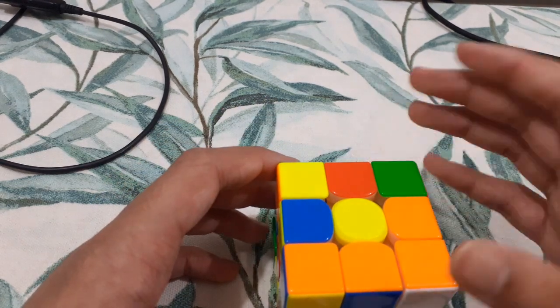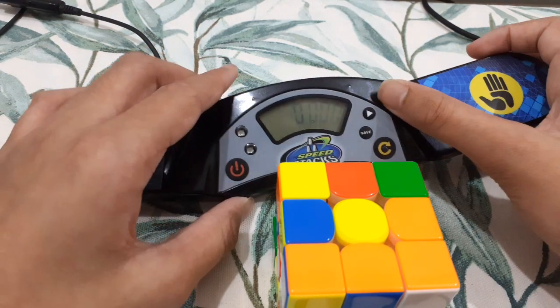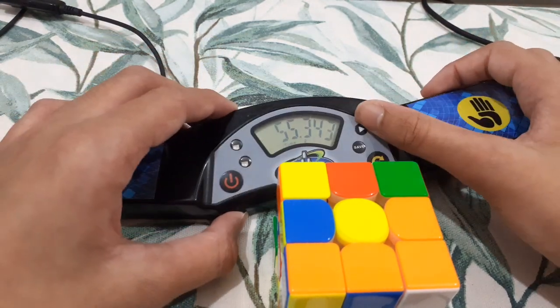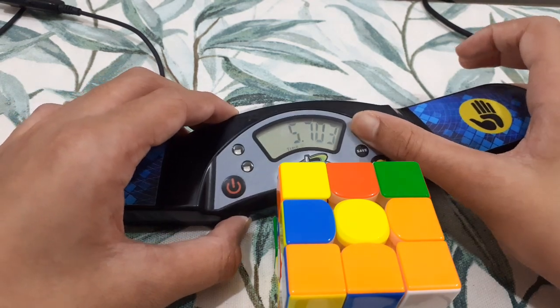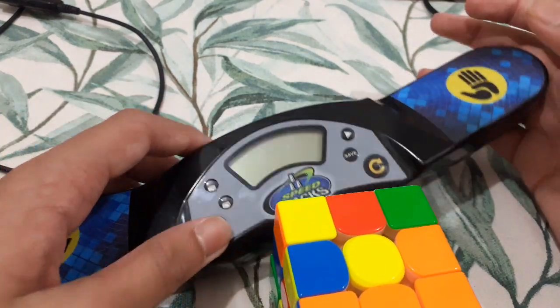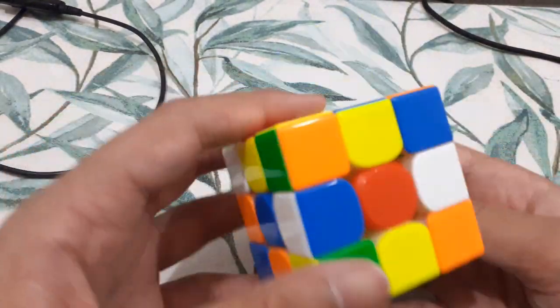Hey, what's up guys? I just beat my 3x3 PB single after over six months. My previous time was 5.70 seconds. This is PB by 0.13, and I'm super happy with this.